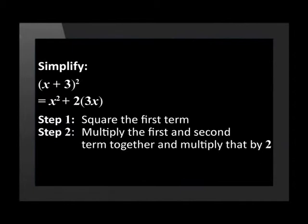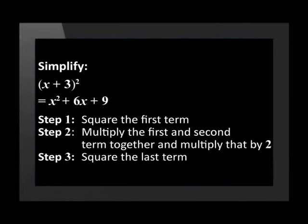Step 2 requires us to multiply the first and second term together and multiply that by 2. So x times 3 is 3x and that times 2 is 6x. The last step in this shortcut is to square the last term. 3 squared is 9.